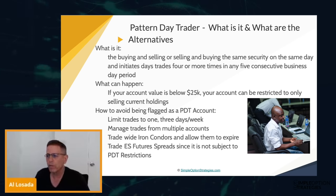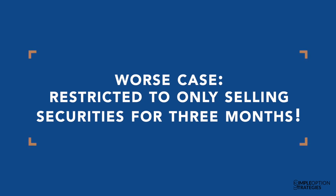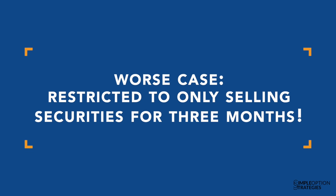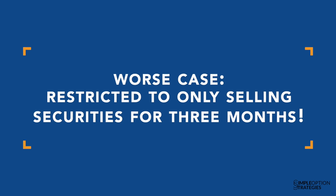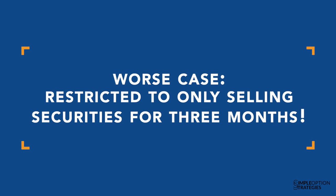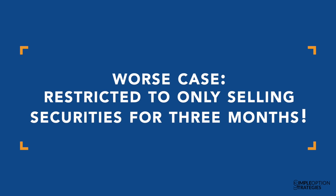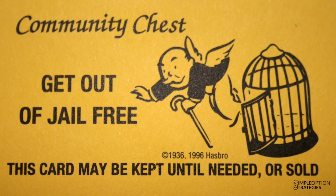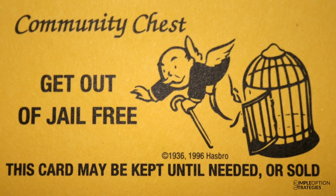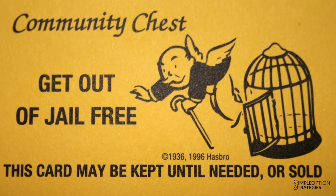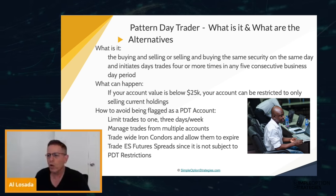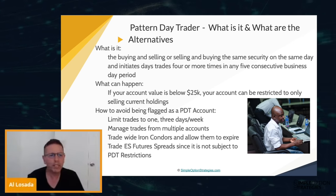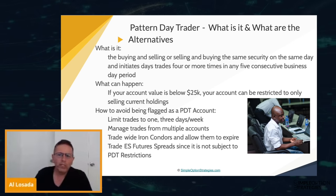If your account is below $25,000, you could potentially — and this is the worst case — be restricted to only selling securities, and that's for three months. You don't want to fall into this area. Most brokers will give you a get-out-of-jail-free pass, like three times, but you want to watch this and avoid getting flagged as a PDT account.